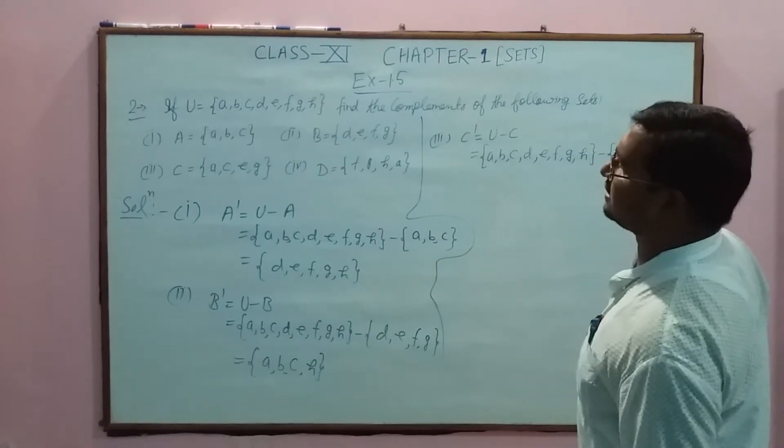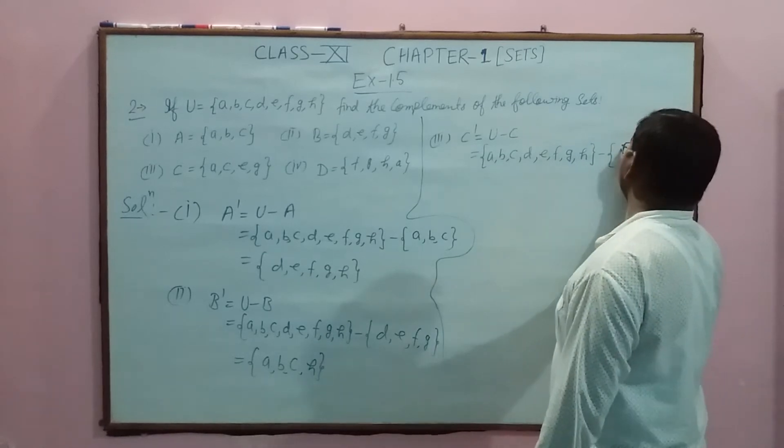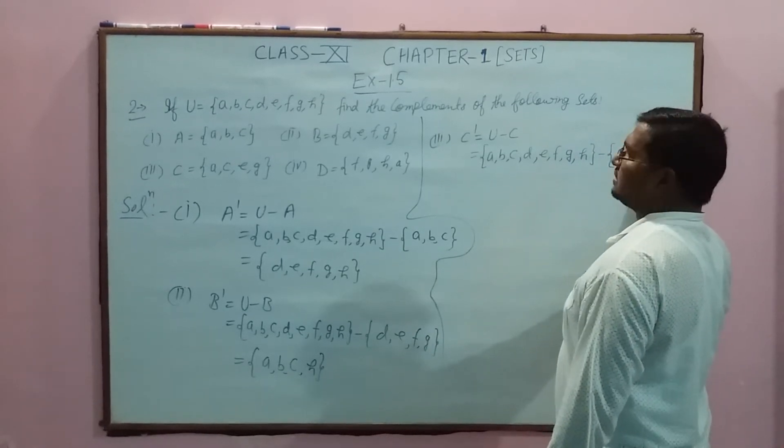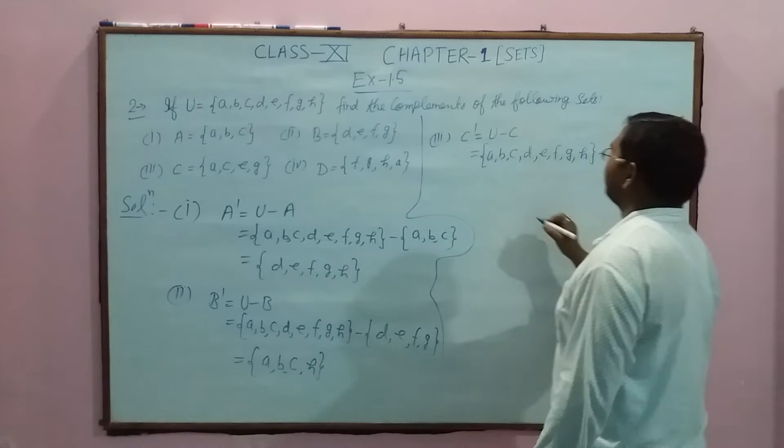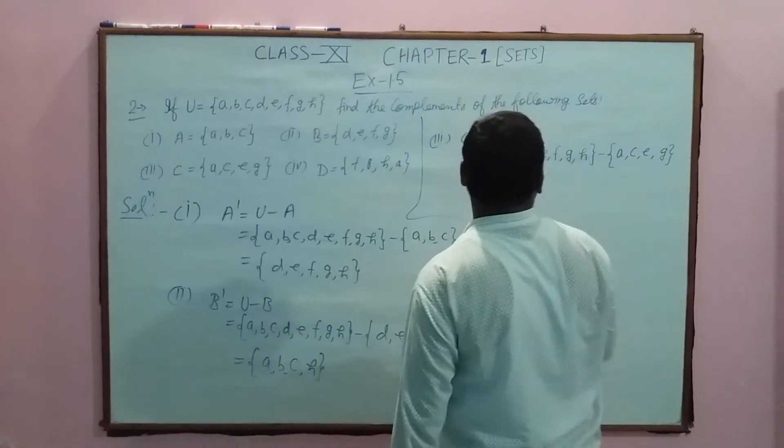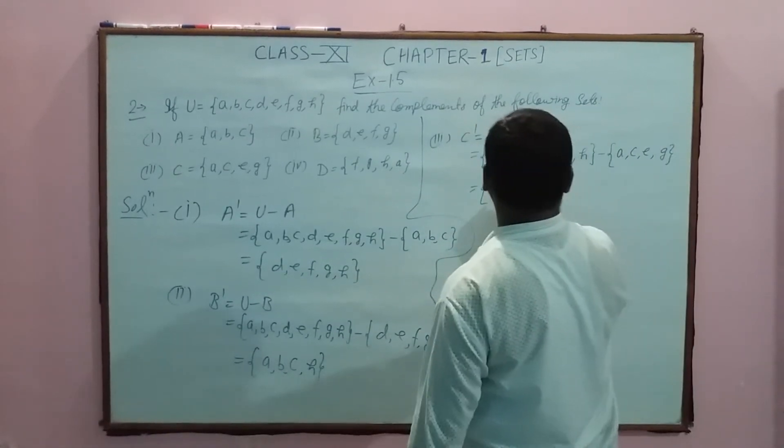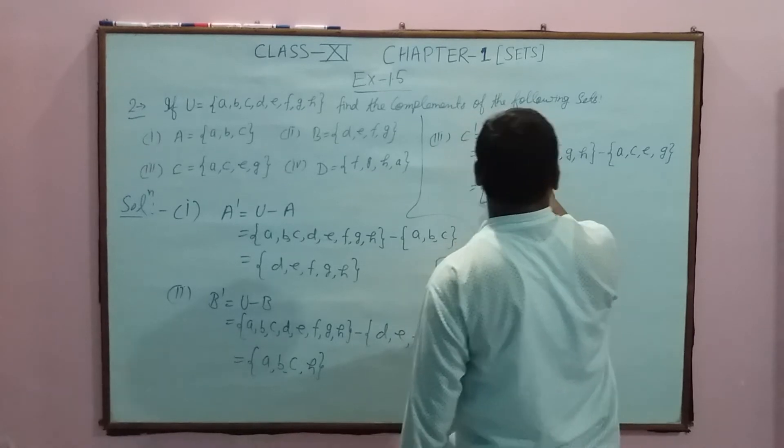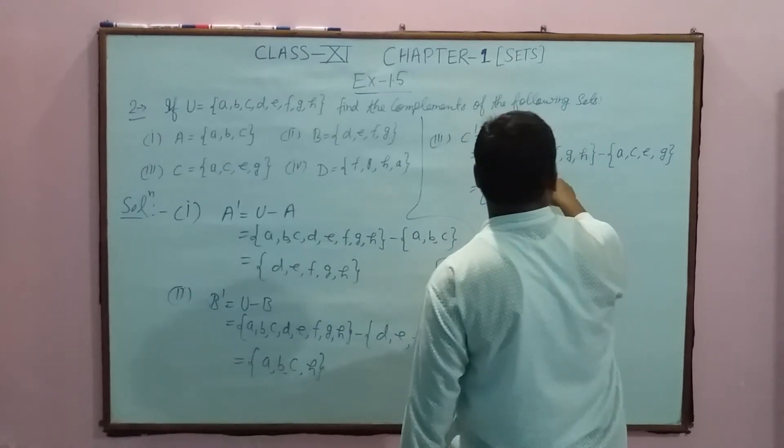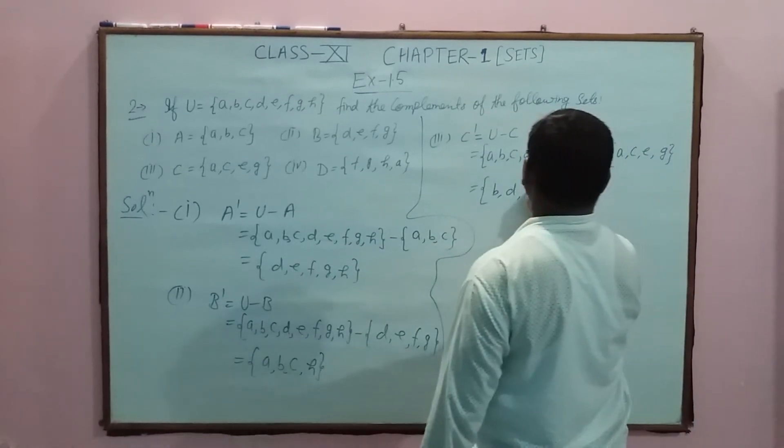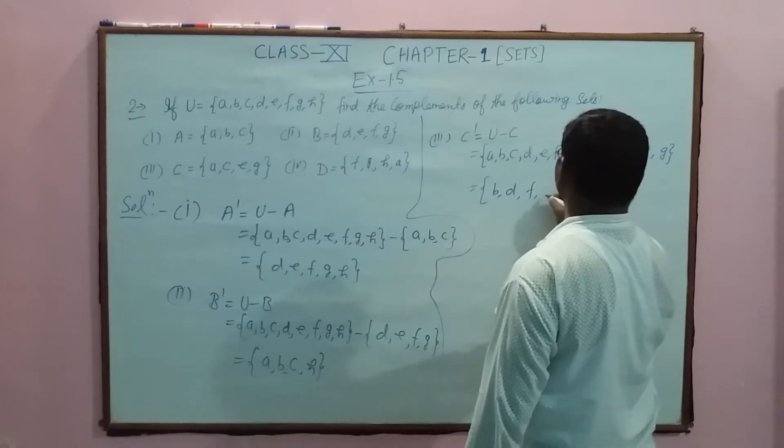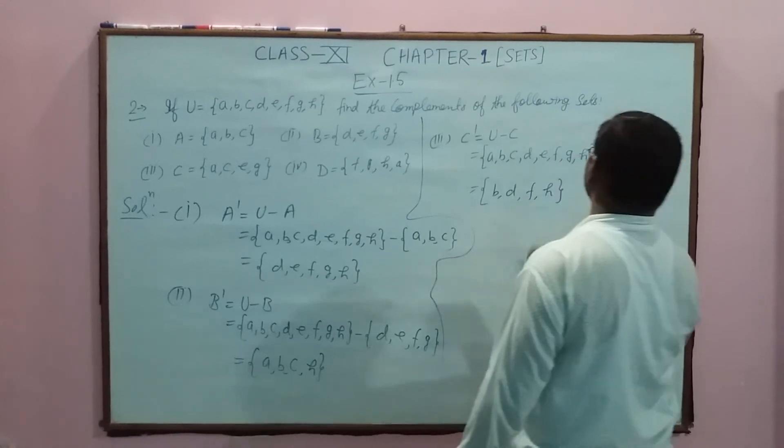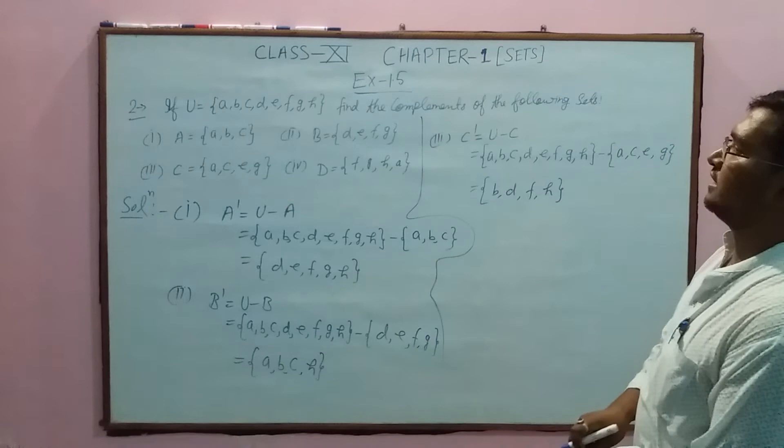C contains the elements: a, c, e, g. Now removing these from U: remove a, remove c, remove e, remove g.